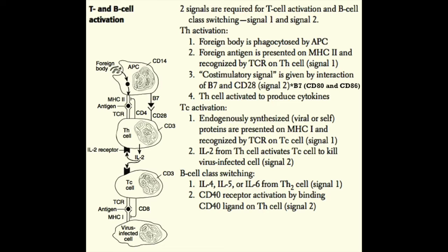Signal 2 is the interaction of co-stimulatory molecules on the APC with CD28 receptors on the T cell — specifically, B7 (also called CD80 or CD86) on the APC binding to CD28 on the T cell. Only when both signals are received will the T cell become activated. Additionally, CD40 ligand on the T helper cell can bidirectionally co-stimulate the APC — whether a macrophage or B cell — by binding to CD40 on the APC surface.